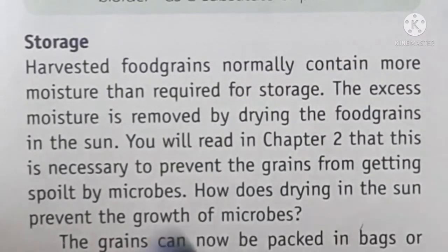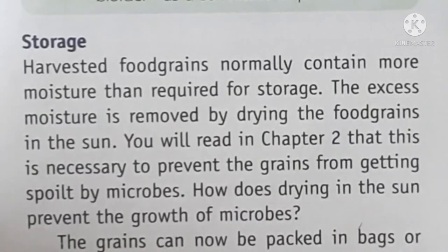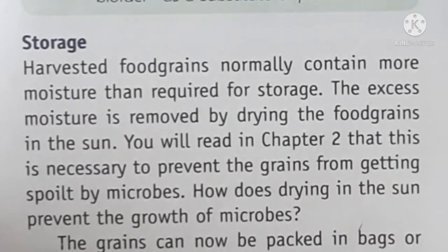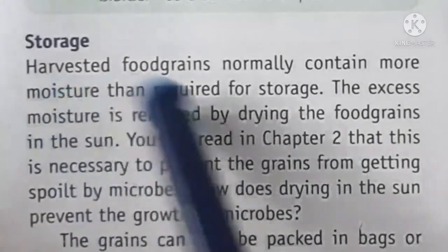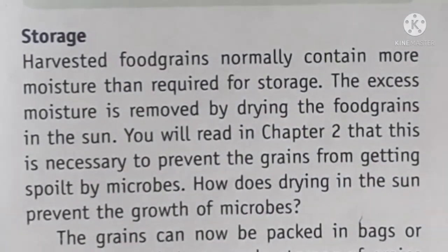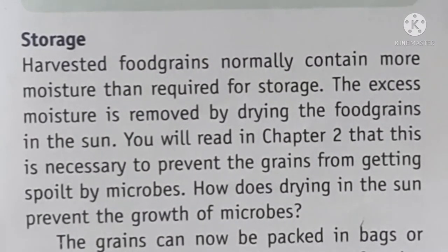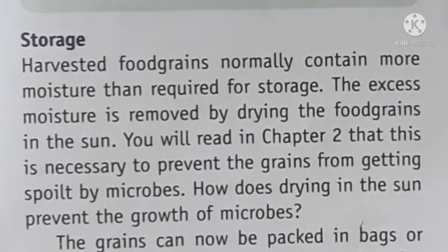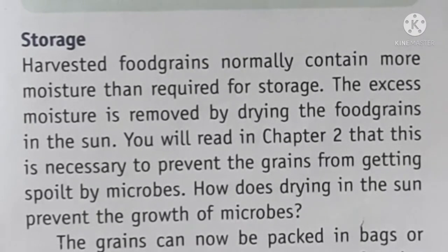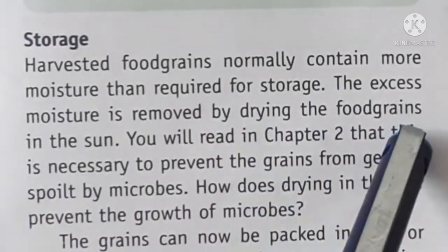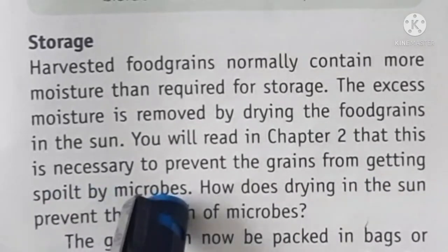After all these steps, the last one is storage. After working for 4 to 5 or 6 months, if you don't store properly, you can lose your whole effort. The harvested food grains normally contain more moisture than required for storage. As we've studied with microorganisms, if moisture is present and the temperature is warm, bacteria and fungi can develop and damage your crop. Before storing, it is necessary to completely remove the moisture. The excess moisture is removed by drying the food grains in the sun, which is a very important process to prevent the grain from getting spoiled by microbes.